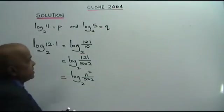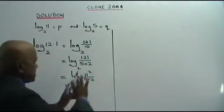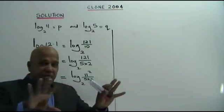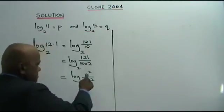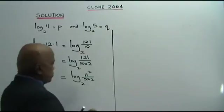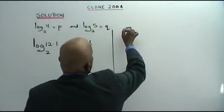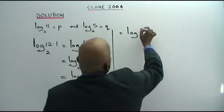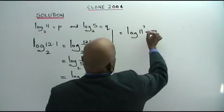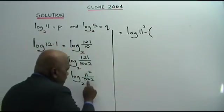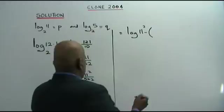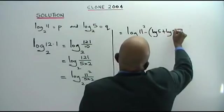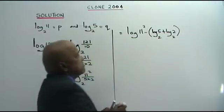If it is clear, I go further now. Next step. This is a single log, but we can break it up into three different logs: 11, 5, and 2. So this is equal to log 11 squared minus bracket, because there are 2 here, so we put a bracket, minus log 5 plus log 2, base 2.